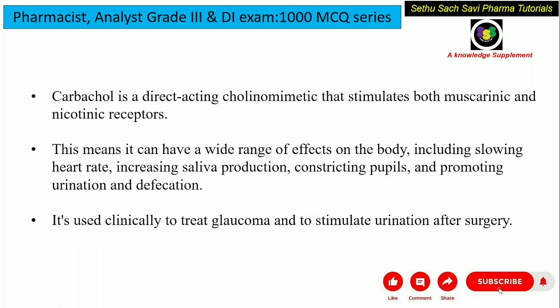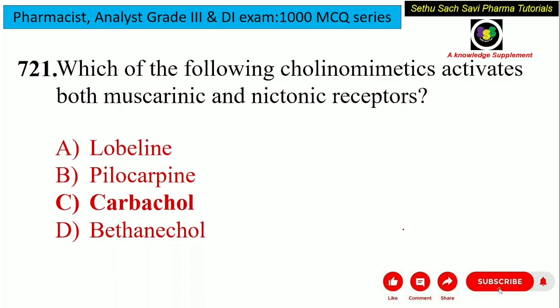It is carbachol. It is a direct acting cholinomimetic that stimulates both muscarinic receptors as well as nicotinic receptors. This means it has a wide range of effects in the body, which include lowering the heart rate, increasing saliva production, constriction of the pupils, as well as promoting urination and defecation. It is mainly used for treating glaucoma and to stimulate urination after surgery. So the correct answer is option C, carbachol.